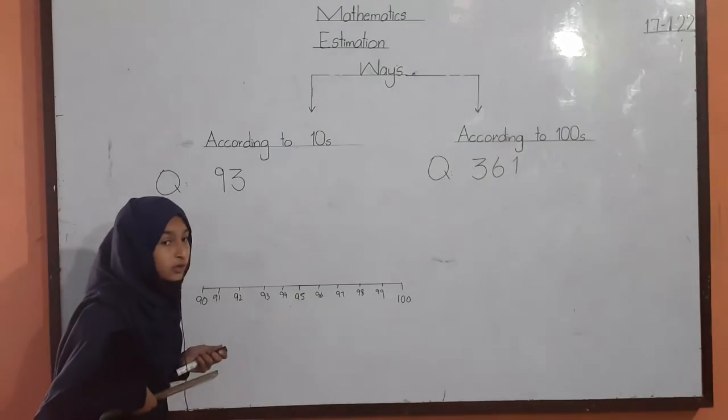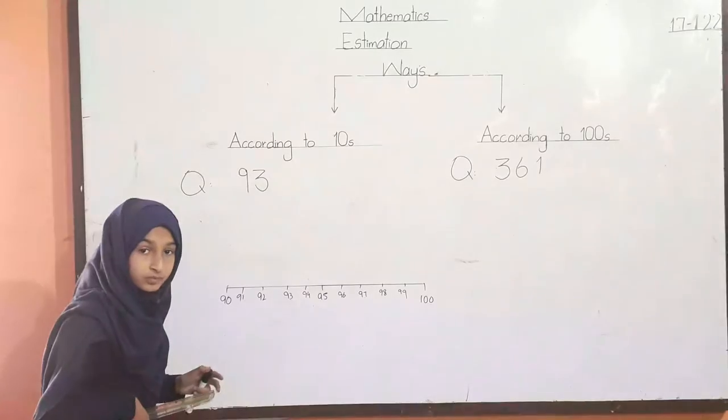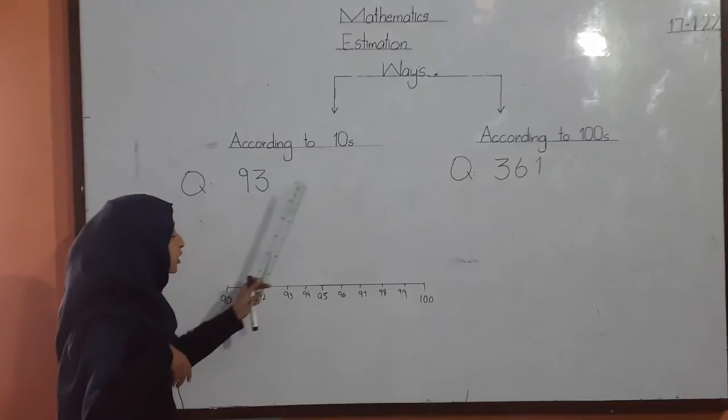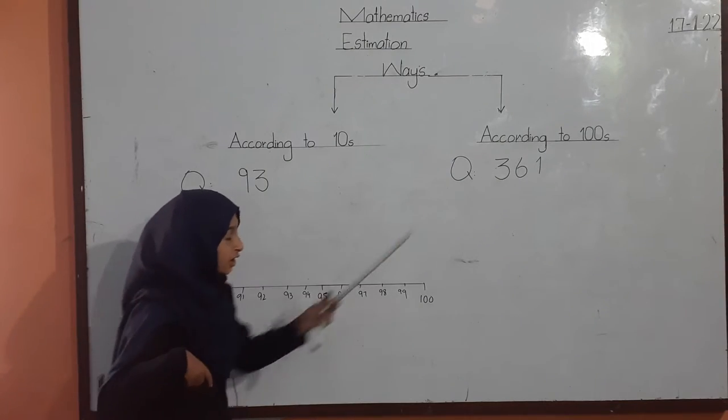There are two ways of estimation. Number one: according to tens. Number two: according to hundreds.